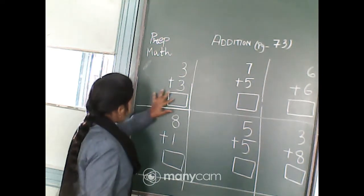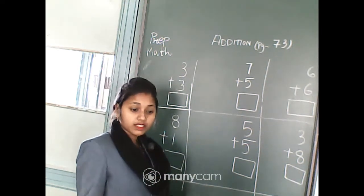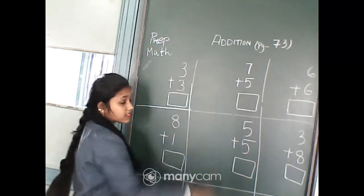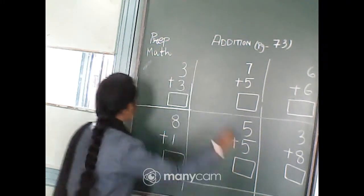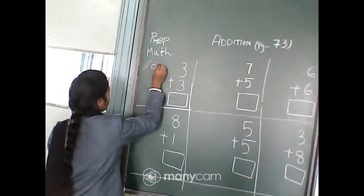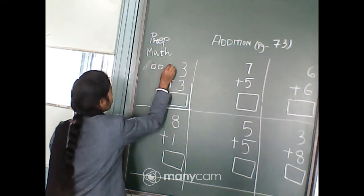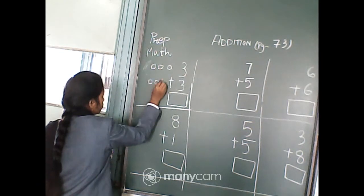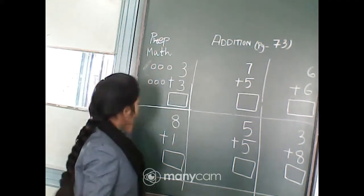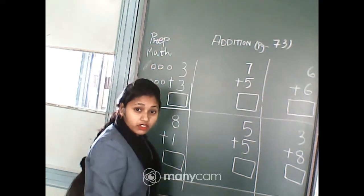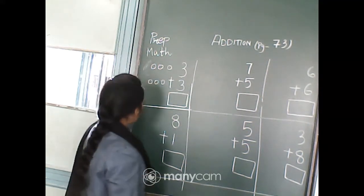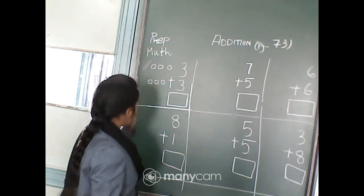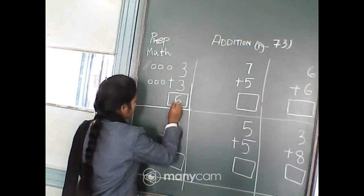3 plus 3. We will draw the circles and we will do the addition. First we will do 3 circles: 1, 2, 3. Again we will draw 3 circles: 1, 2, 3. So now we will add all together — 3 plus 3: 1, 2, 3, 4, 5, 6. So the answer is 6.